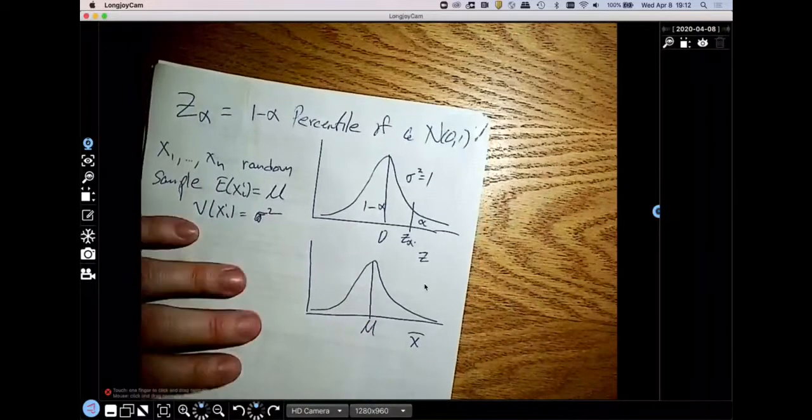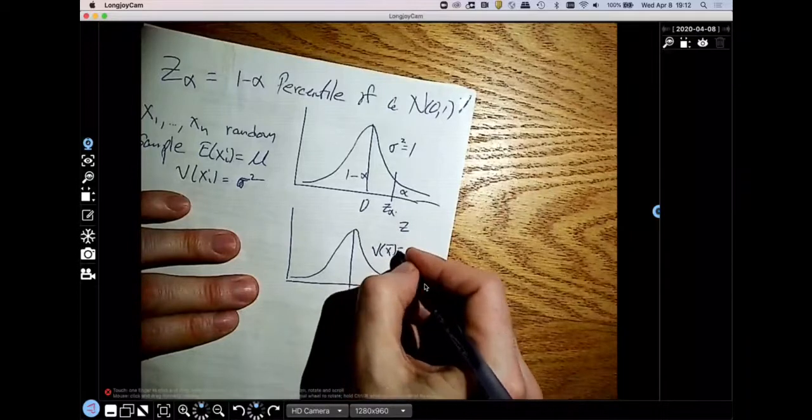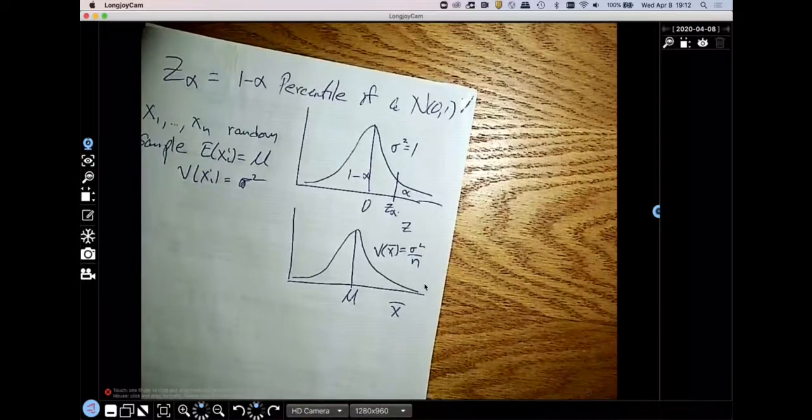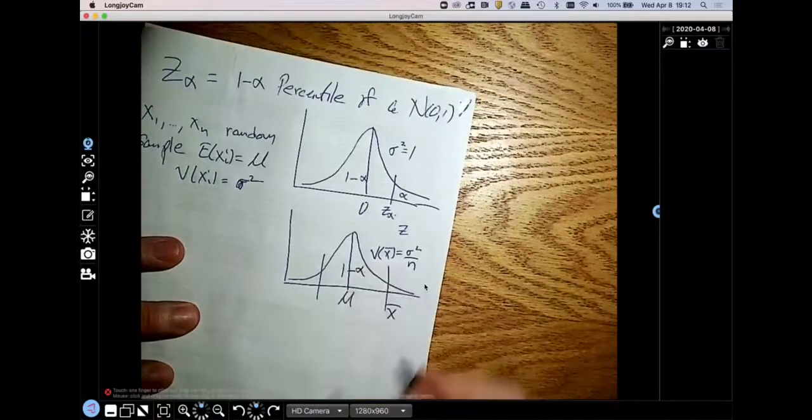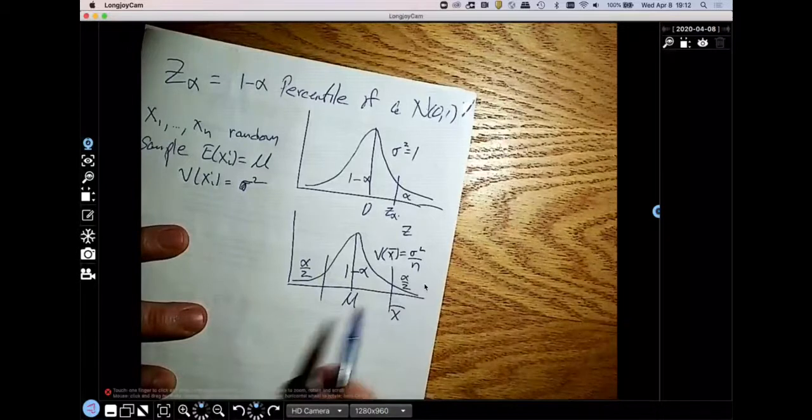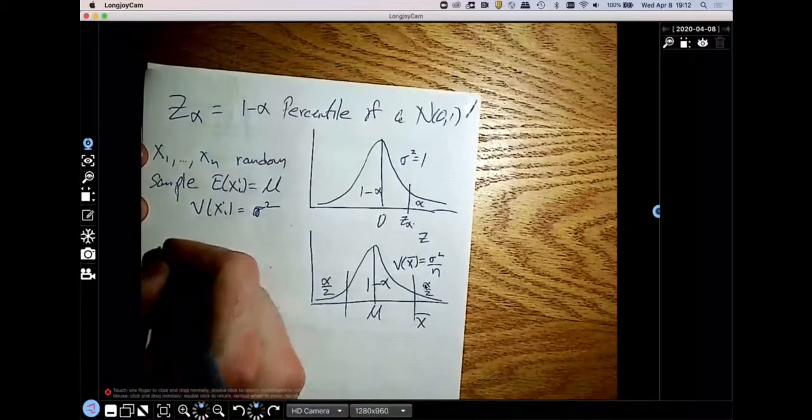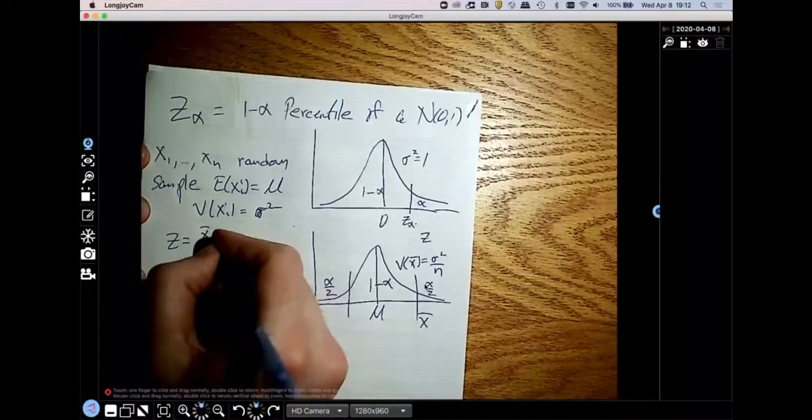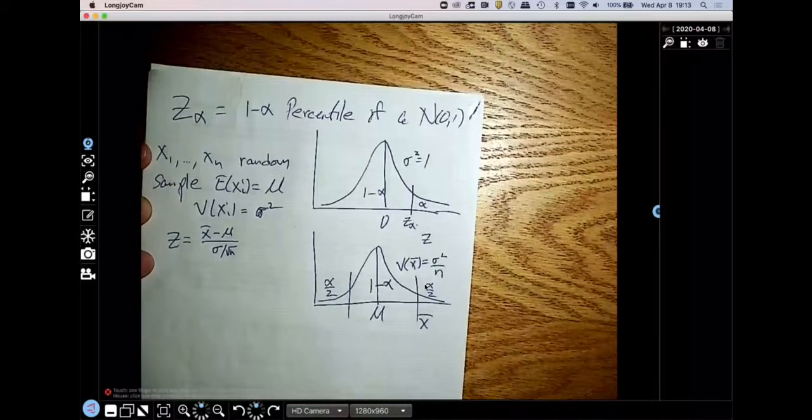So then the sampling distribution will be normal with that mean and the variance of X bar equals sigma squared over N. Now, I'm going to write down a true statement. So we can convert X bar into a Z distribution. We can make a Z if we take X bar minus its mean divide by its standard deviation. So this is the square root of the variance, which gives the standard deviation.